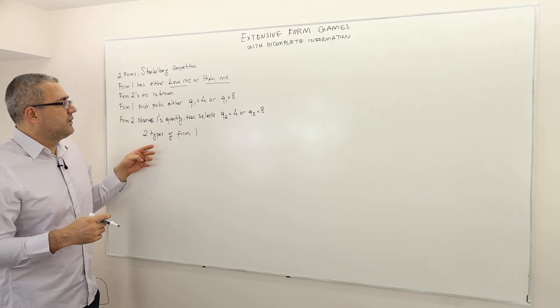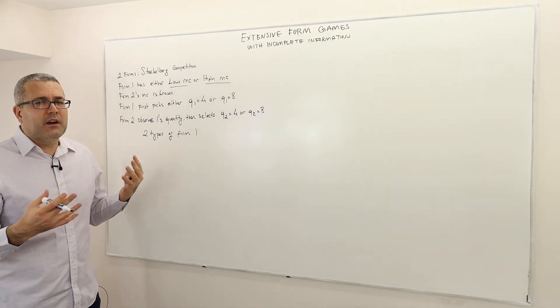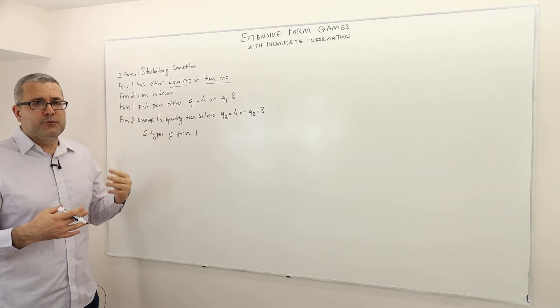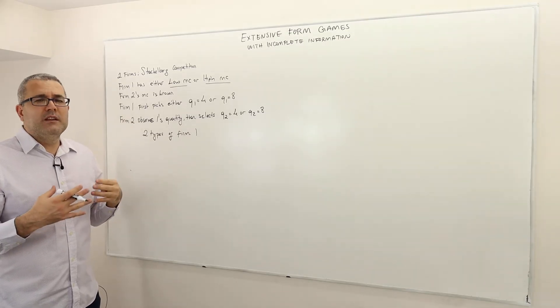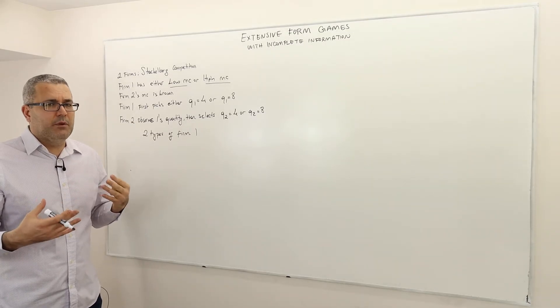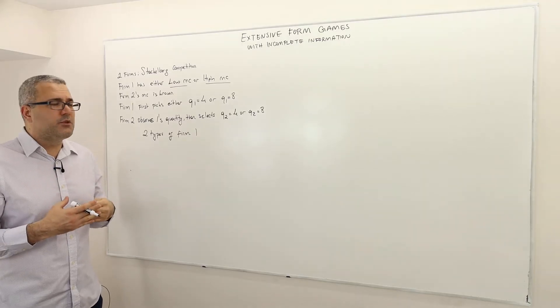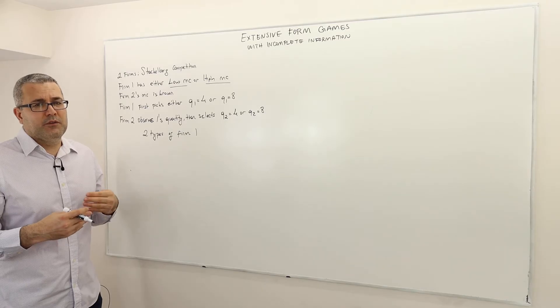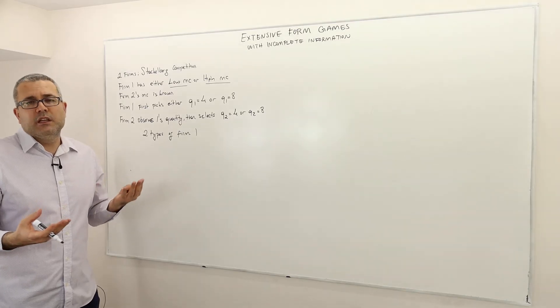Well how do these types occur? Are these choices that belong to player 1 or firm 1 or firm 2? No they're not. Firm 1 cannot choose its own type. That's an important assumption. Well then what determines or who determines the type of the players? Well no one really.